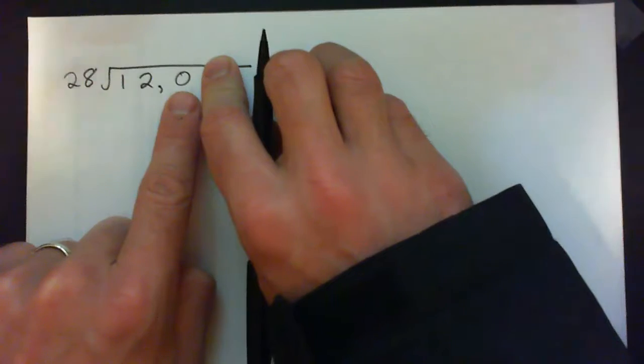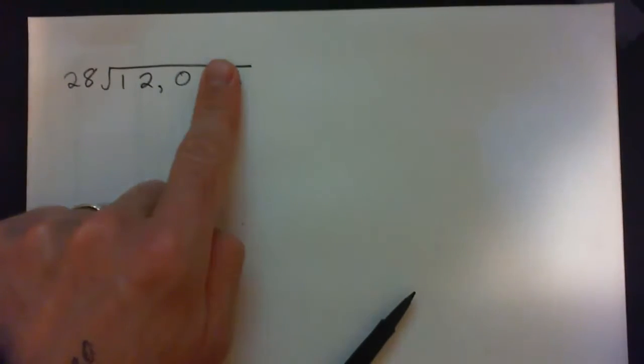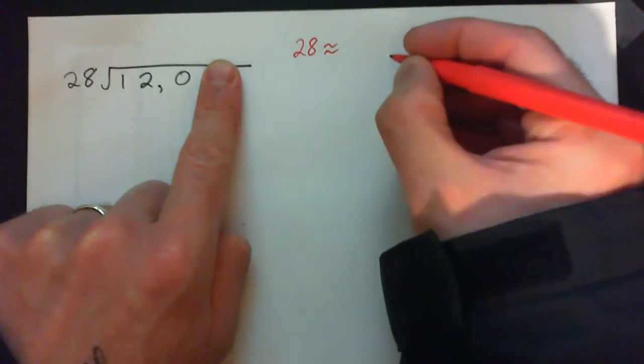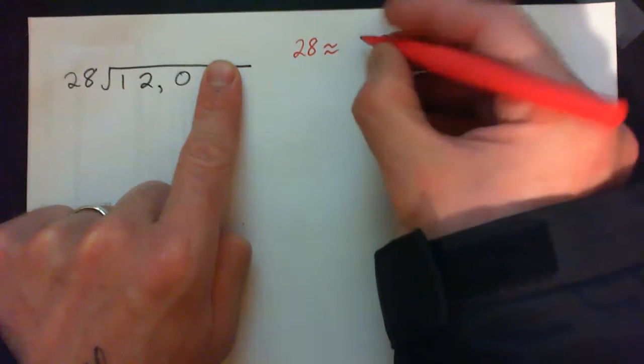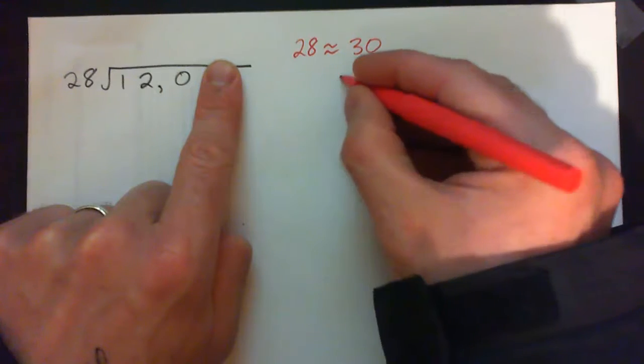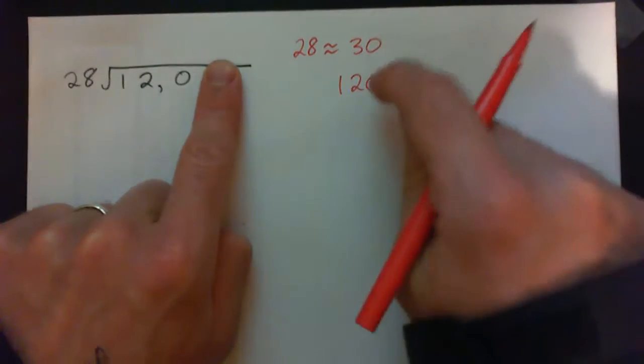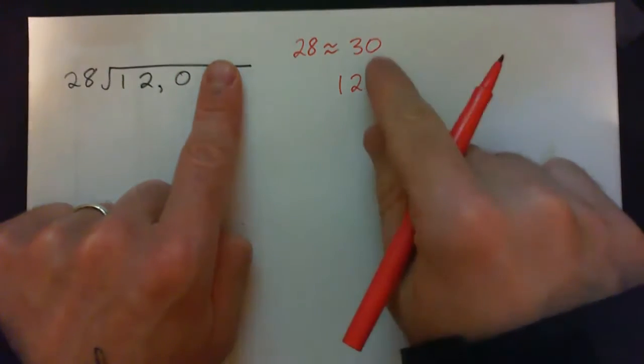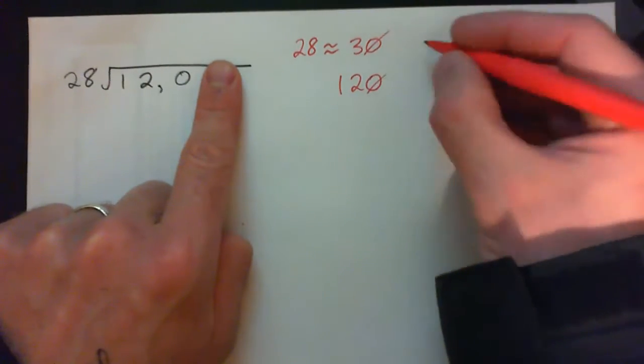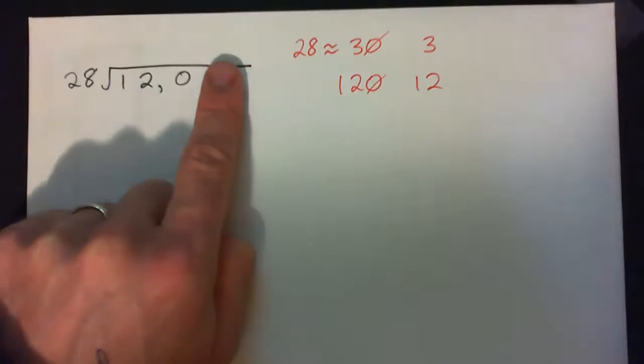You can think how many times does that go? If you have a hard time and don't have your 28 times tables memorized, we can say 28 is approximately 30. It's 30 into 120. Or if that still confuses you, knock these zeros off because 30 into 120 is the same thing as 3 into 12. So 3 into 12 goes how many times?